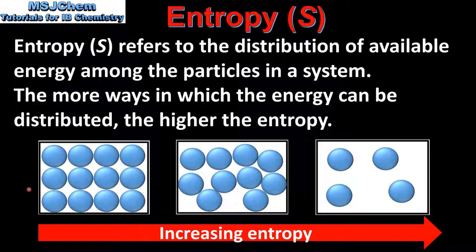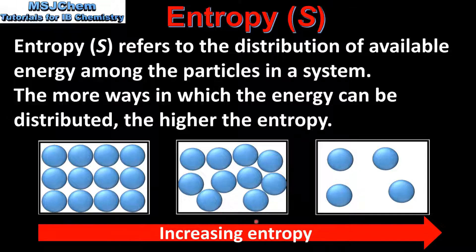In this video we'll be comparing the entropy of the three states of matter: solid, liquid, and gas. So in order of increasing entropy we have solids with the lowest entropy, liquids, and then gases with the highest entropy.